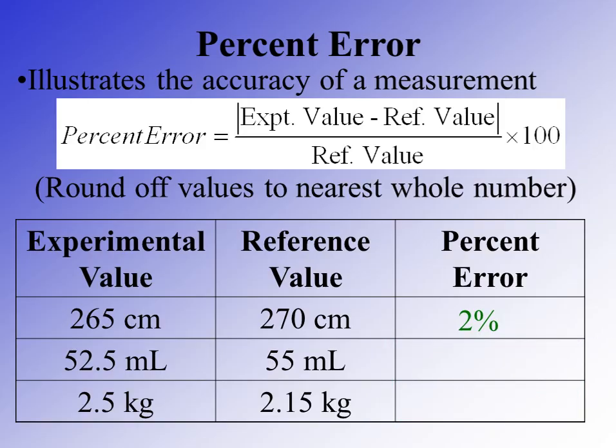In the second example, an experimental value of 52.5 milliliters and a reference value of 55 milliliters gives a difference of 2.5 milliliters. Dividing 2.5 by 55 and multiplying by 100 gives 5% error. In the last example, an experimental value of 2.5 kilograms and a reference value of 2.15 kilograms gives a percent error of approximately 16%.